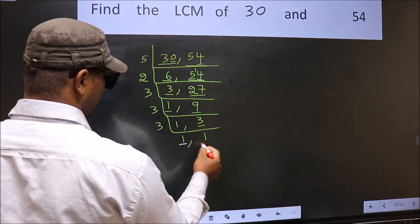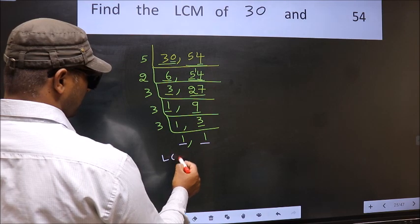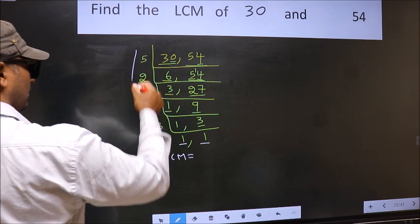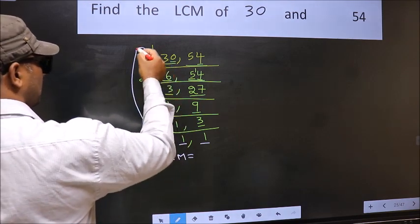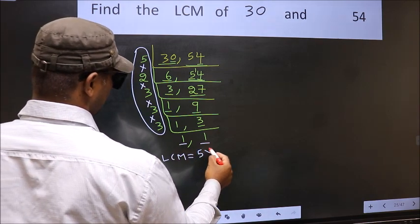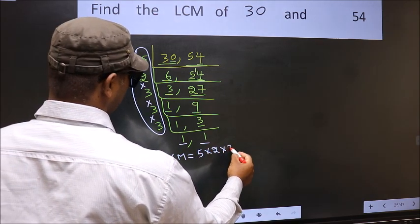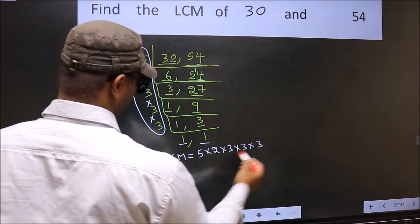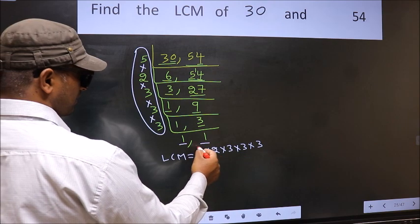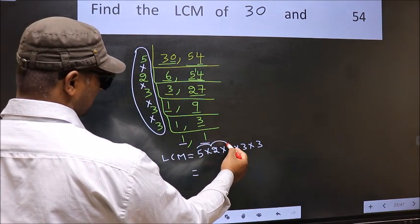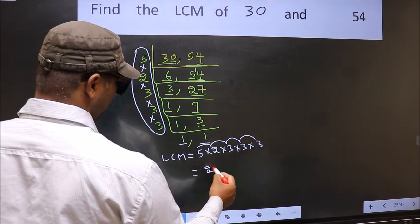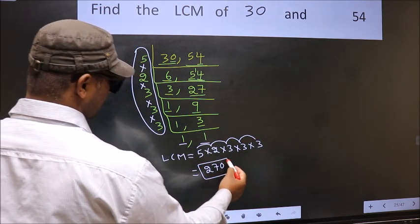So we got 1 in both the places. So our LCM is the product of these numbers: 5 into 2 into 3 into 3 into 3. So let us multiply these numbers. 5 into 2, 10 into 3, 30 into 3, 90 into 3, 270. 270 is our LCM.